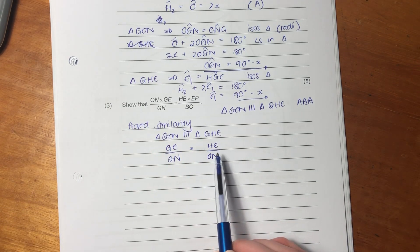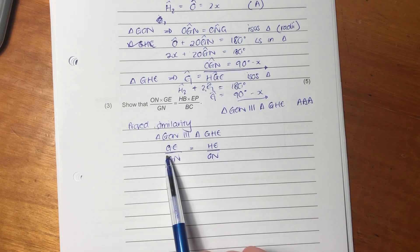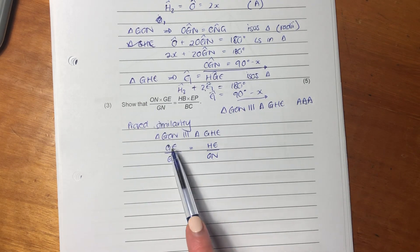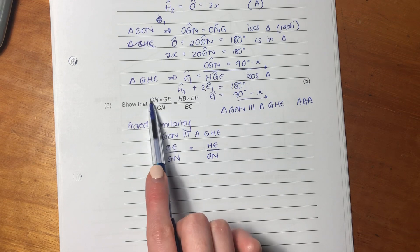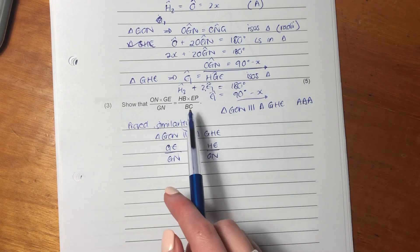So I got this G-E over G-N. And then I wanted to get an O-N. So I got the O-N there, but now I have this H-E and there's no H-E in there.